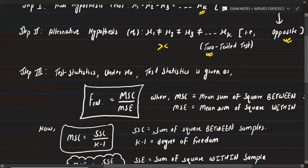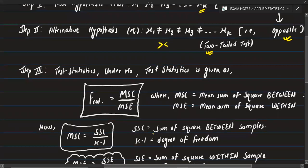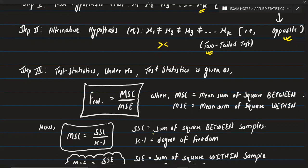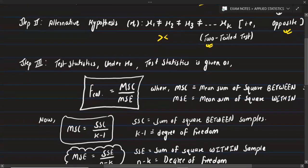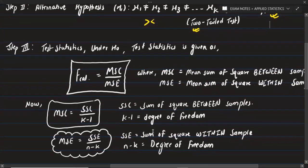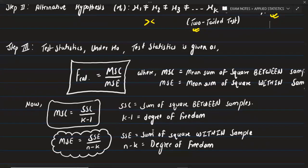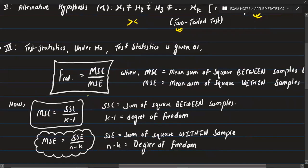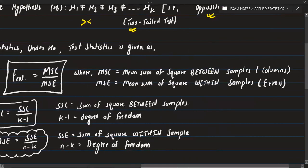Step 3: the formula. The test statistic under the null hypothesis is the F calculated value, which equals MSC upon MSE. MSC is the mean sum of squares between samples.